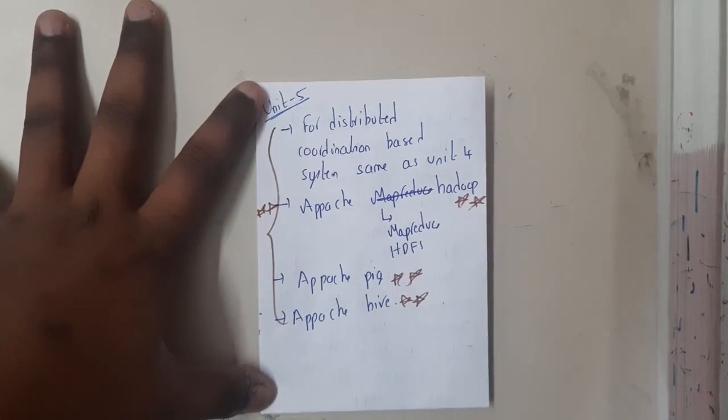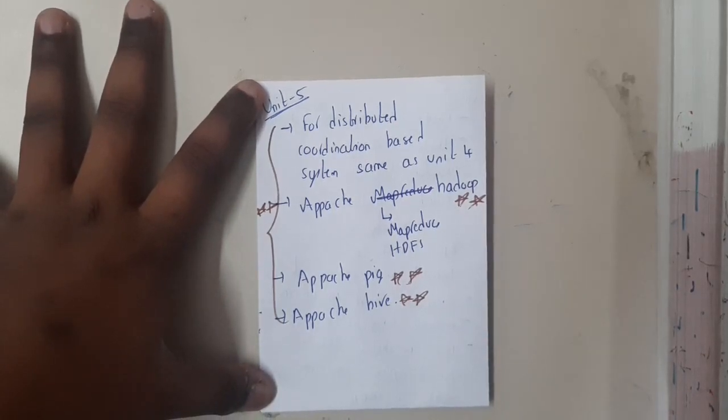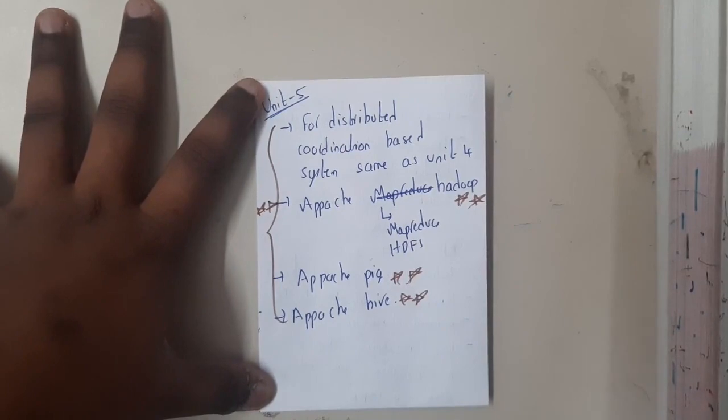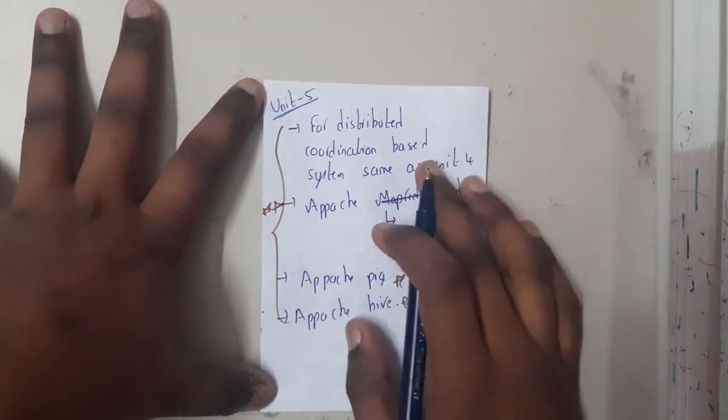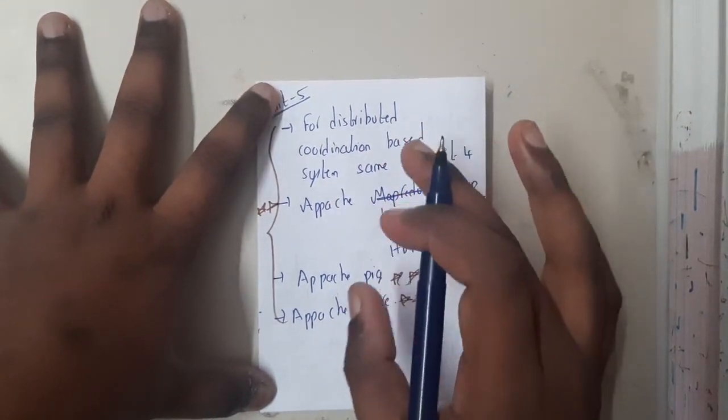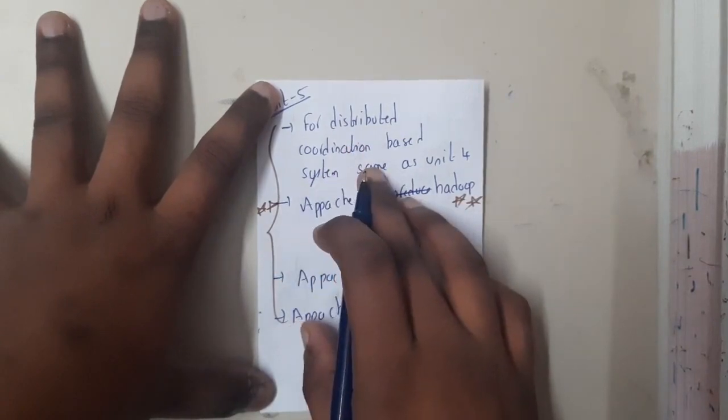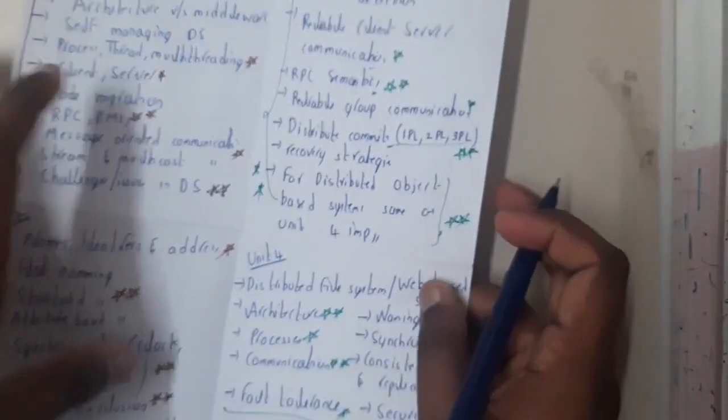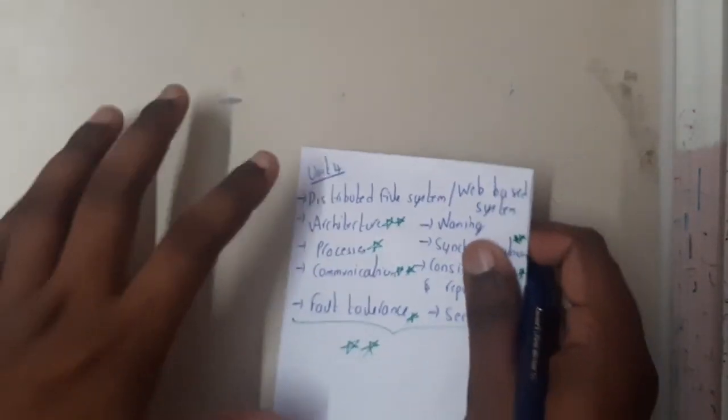Hello guys, we are back with our next lecture. In this lecture, let us go through the important topics of Unit 5 of Distributed System. The first part of Distributed System discusses coordination-based systems.